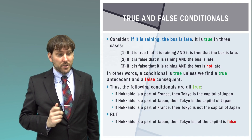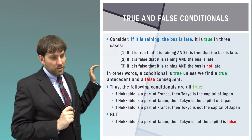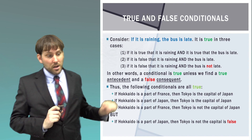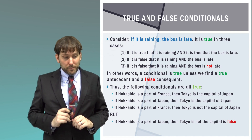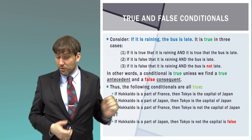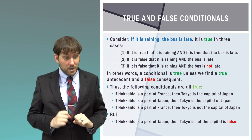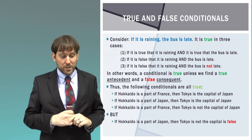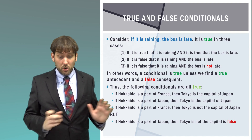If it is raining, then the bus is late. This is true in three cases: it is raining and the bus is late; it is not raining and the bus is late; it is not raining and the bus is not late. A conditional is true unless we find a true antecedent and a false consequence. So: if Hokkaido is a part of France, then Tokyo is the capital of Japan — the antecedent is false, so the conditional is true. If Hokkaido is a part of Japan, then Tokyo is the capital — true antecedent, true consequence, so true. If Hokkaido is part of Japan, then Tokyo is not the capital — true antecedent, false consequence — this is false.